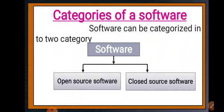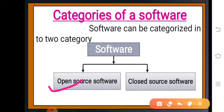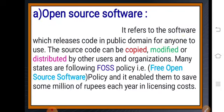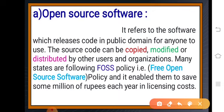Basically, the category of software is divided into two categories. The first one is open source software and the second one is closed source software. Open source software refers to software which releases code in a public domain for anyone to use. Through open source software, anyone can copy them, anyone can use them, anyone can modify them as per their requirement. The source code can be copied, modified or distributed by other users and organizations.